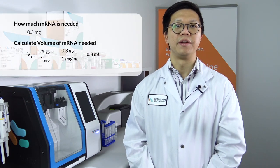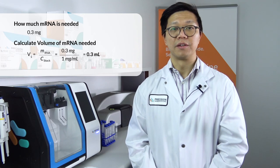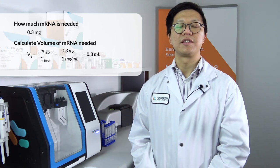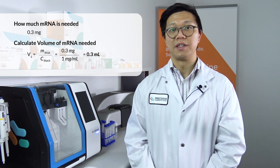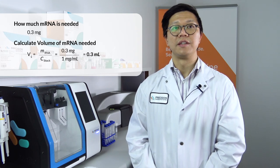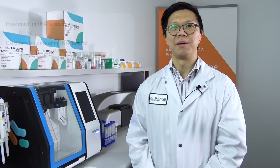So at first, you'll need to measure enough RNA for this encapsulation. Typically, when you order your mRNA, it'll come in roughly 1 mg per mL concentration. And then, using this equation that you see here, you can calculate the volume that you're going to need. In this case, since we're doing 0.3 mg, we're going to need 0.3 mL of mRNA.